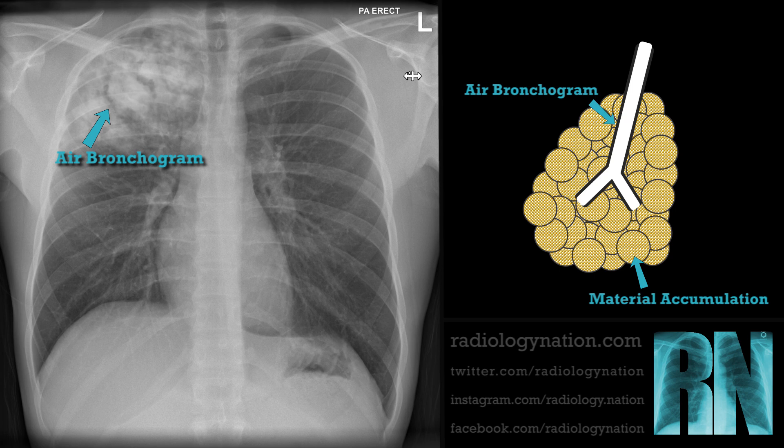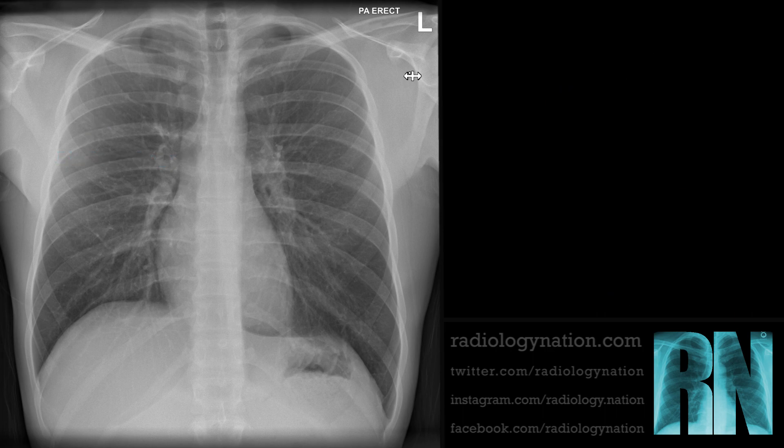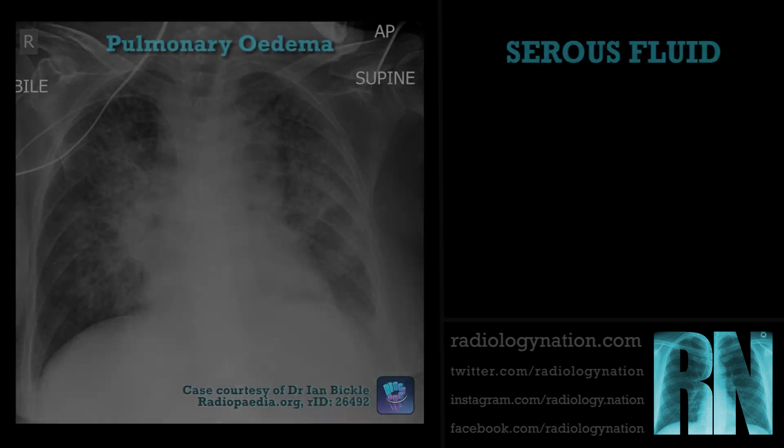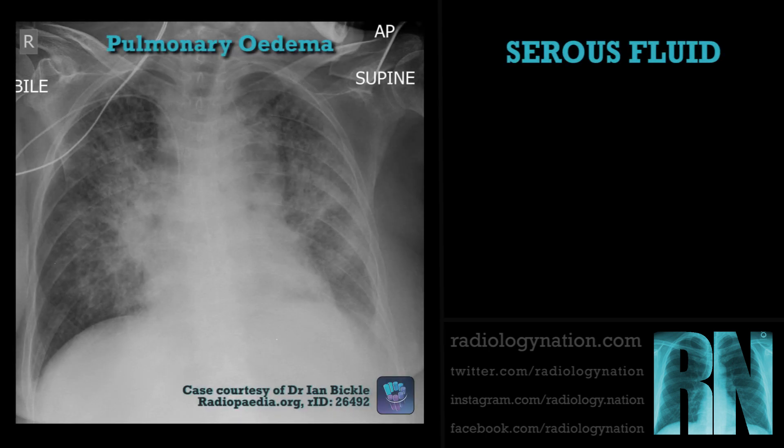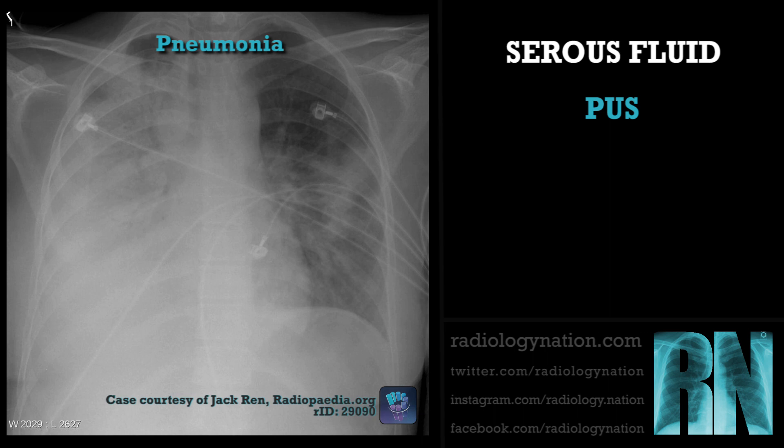There are various causes of fluid and/or material buildup within the alveoli. Four common causes of consolidation are listed here. Accumulation of fluid within the alveoli — pulmonary edema — is frequently due to left heart failure, renal failure, or liver failure. Pus in the alveoli is caused by pneumonia, and the most common causative pathogen in adults is Streptococcus pneumoniae.